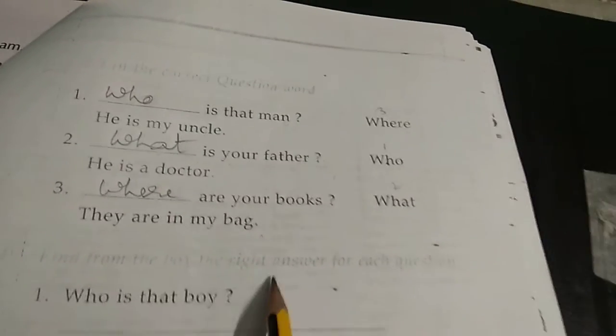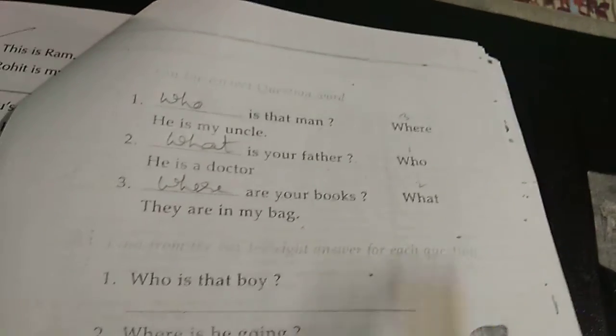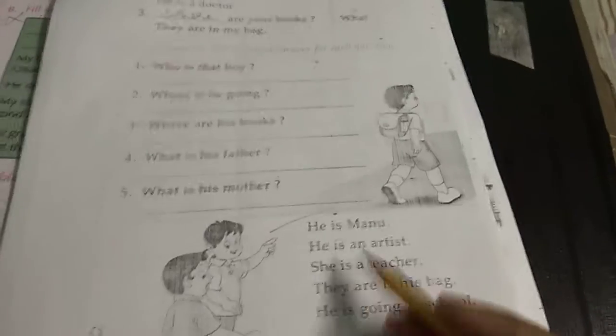Find from the box the right answer for each question. These are the questions, answers are here. These are the answers: 1, 2, 3, 4, 5. These are the questions.